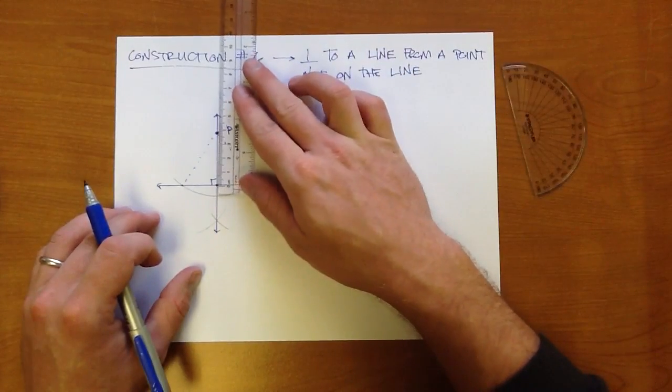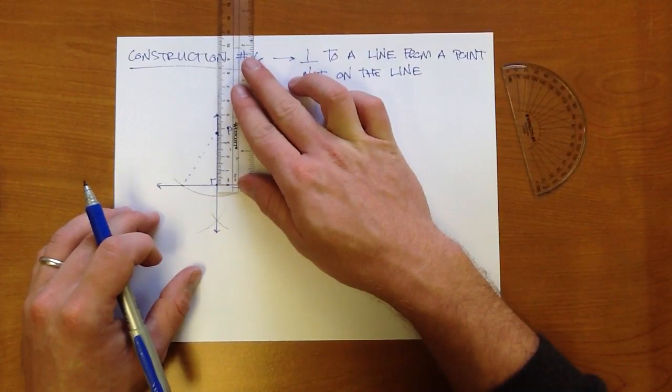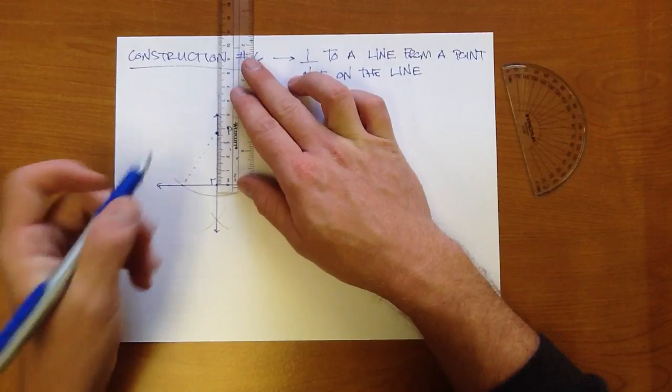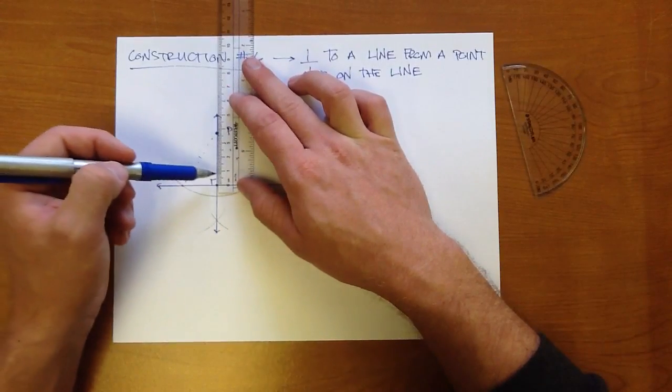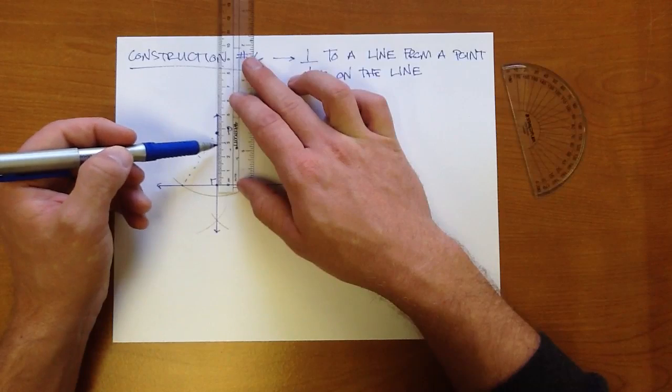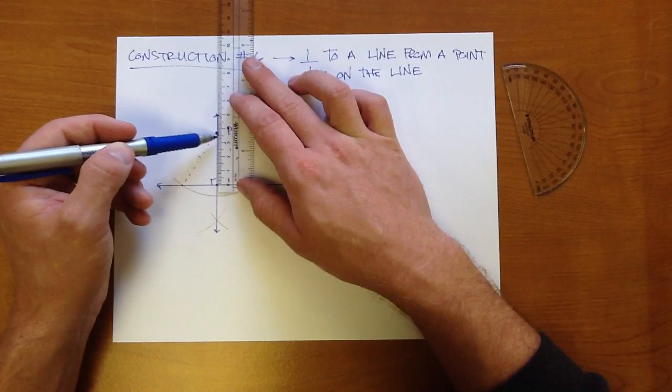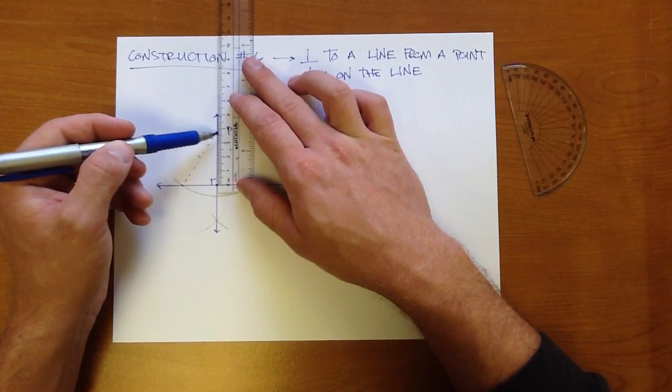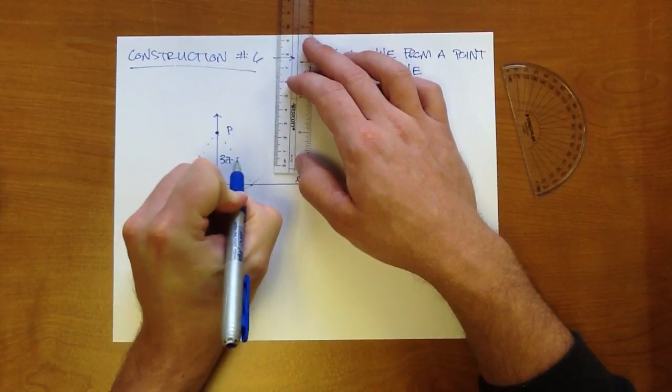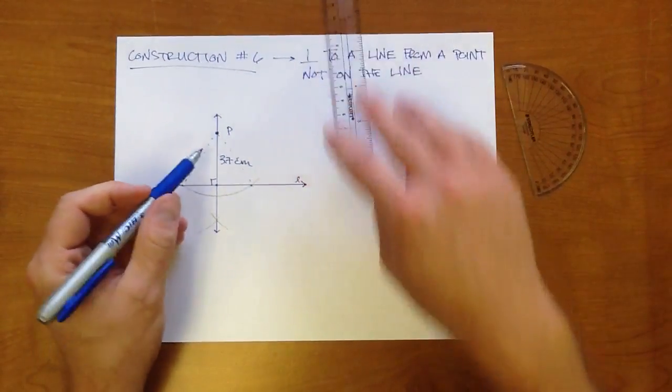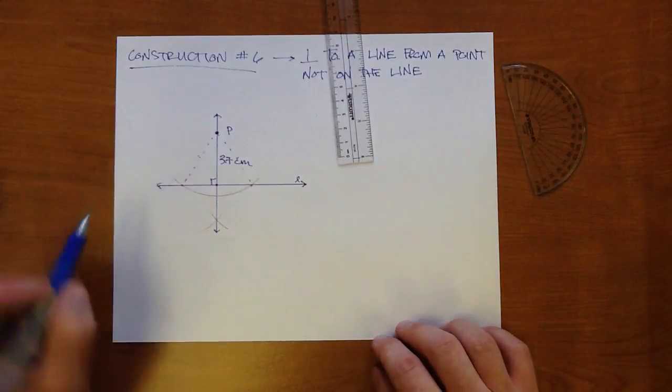So let's say we wanted to actually do that. You'd say, all right, measure it up. If I want it in centimeters, then you'll measure in centimeters. If we want it in inches, you'll measure in inches. This would be 1, 2, 3 1⁄2, 3.567. So about 3.7 centimeters is the distance from point P to line L.